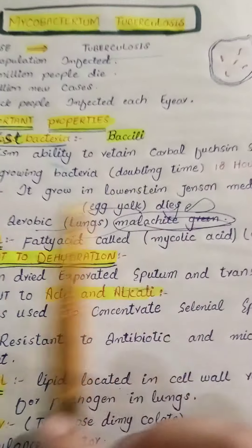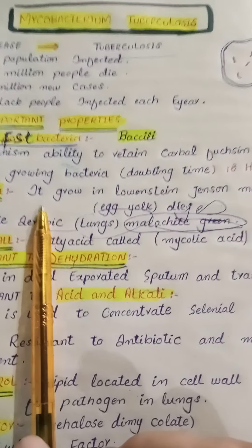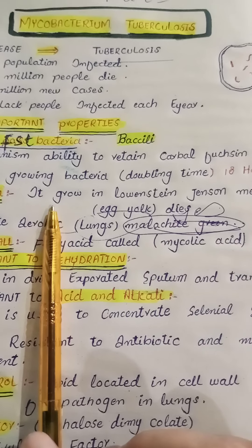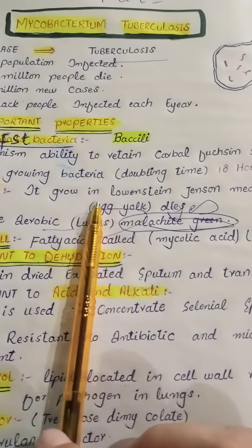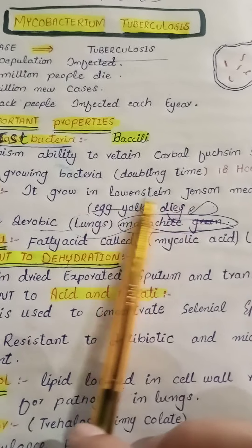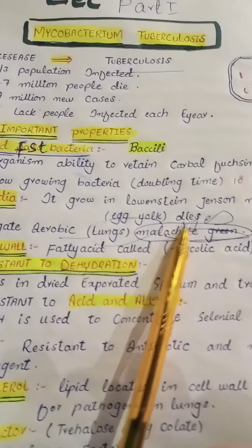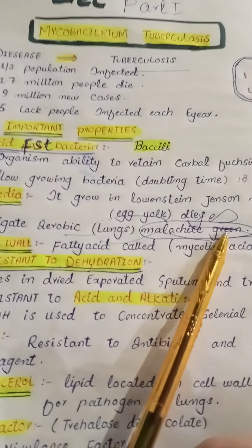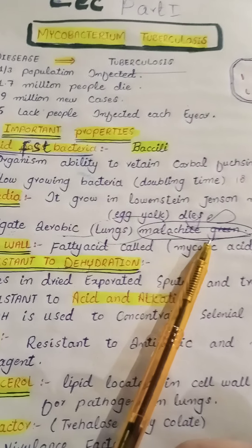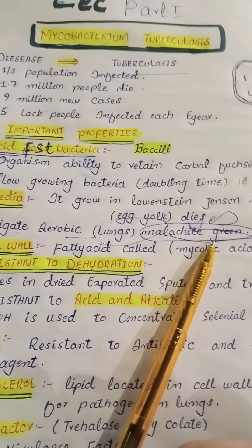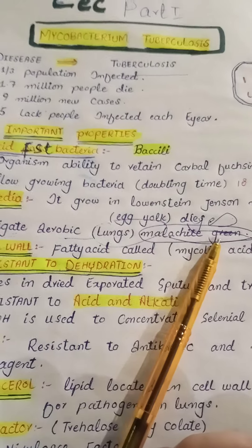Now, the important medium used for this bacteria — the medium used for the growth of this bacterium is Lowenstein-Jensen medium, which contains complex nutrients. Complex nutrients means, for example, it contains egg yolk and dyes. The dye especially used is malachite green dye. This dye inhibits the unwanted normal flora present in the sputum sample.